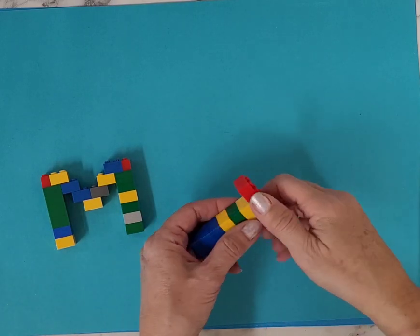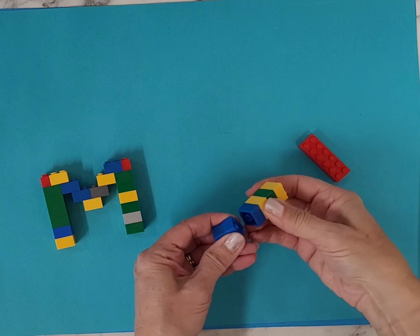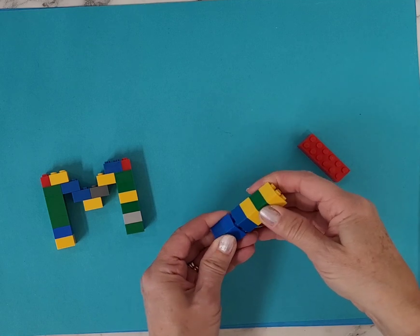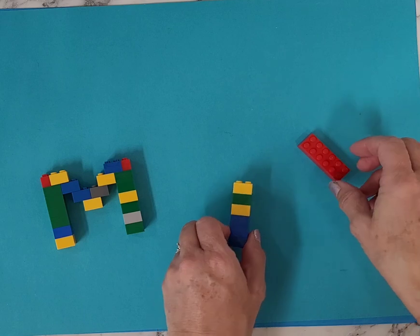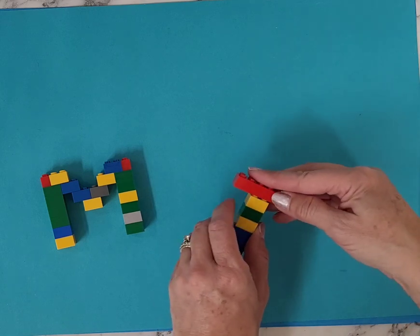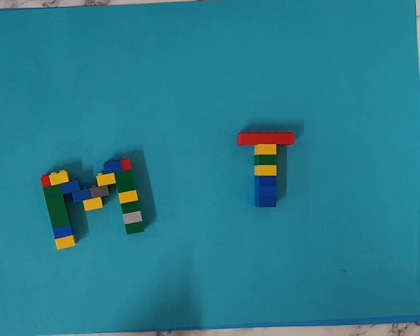T's are obviously pretty easy because all you need to do is just make a stack with these little four pieces, like our little squares I call them, and then get a longer piece for the top and there you've got your T.